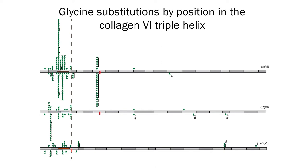The cysteine residue at the 17th GlyXY triplet, marked by the dashed line, is an important structural landmark in Collagen 6, with 89% of glycine substitutions clustered N-terminal to this point. This segment of the triple helix is unencumbered by associations with other chains during the assembly process and may define a functional domain within the segment of the triple helix.